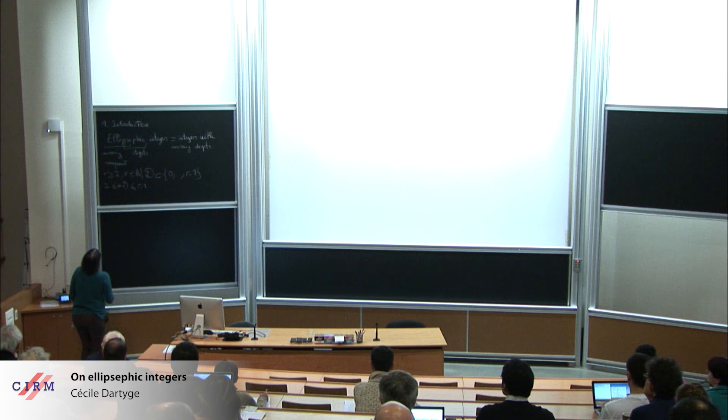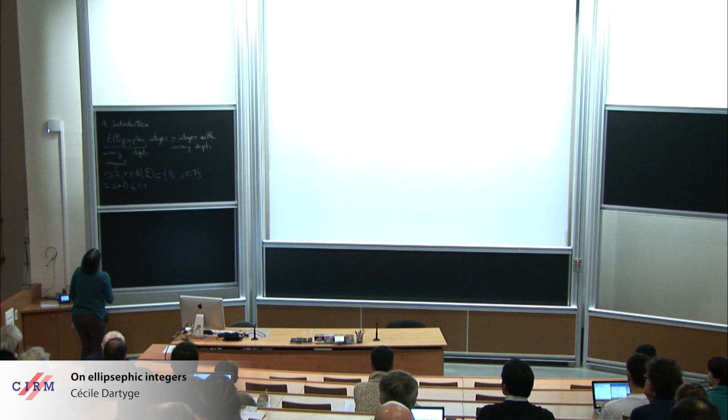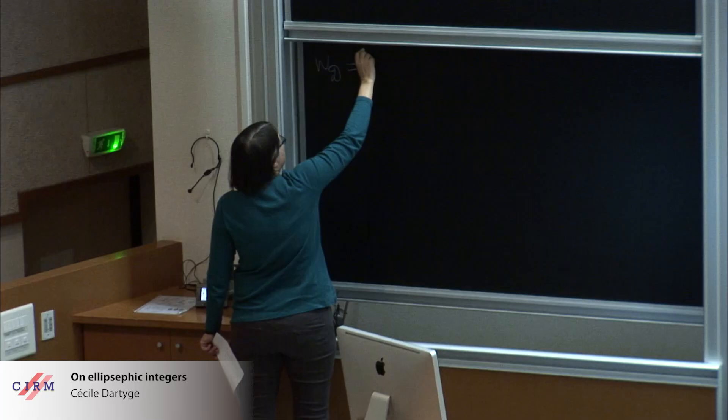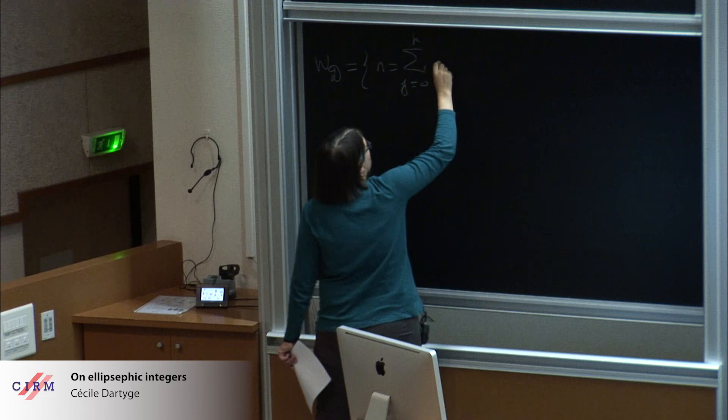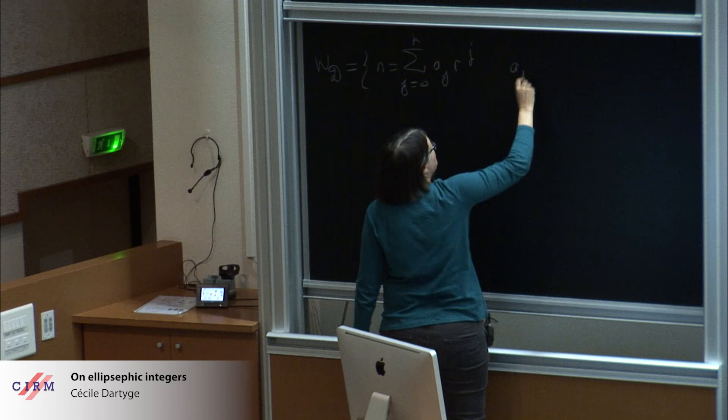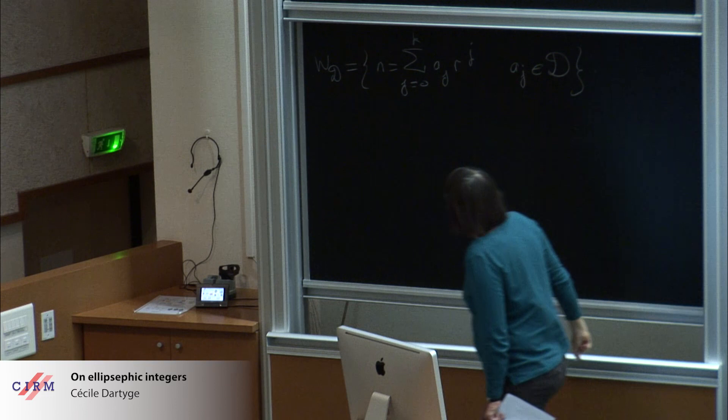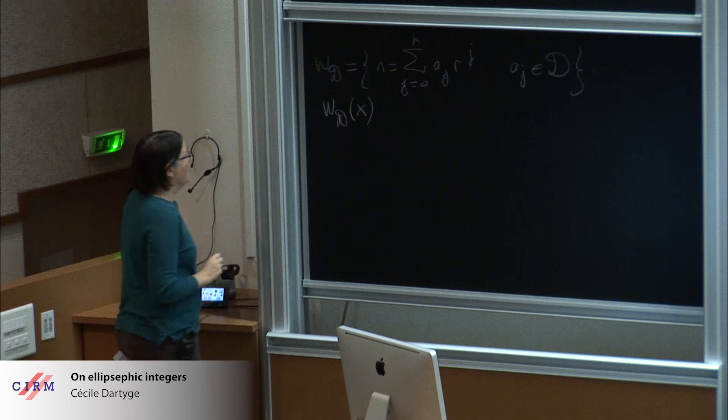Thus the ellipsific integer is the set of integers of the form N. We call N the summation of G equals 0 to some K, A_G times R to the G, with all the digits A_G belongs to D. And the ellipsific number less than X will be denoted by this.